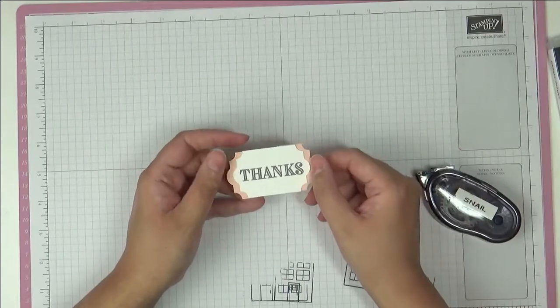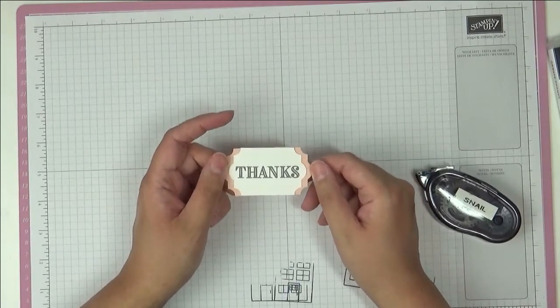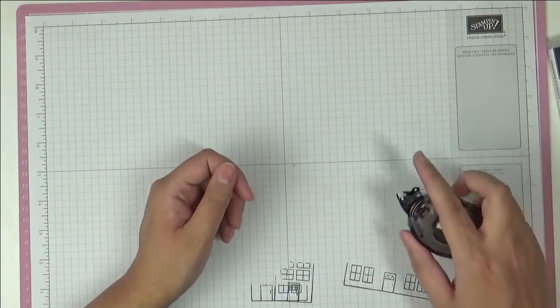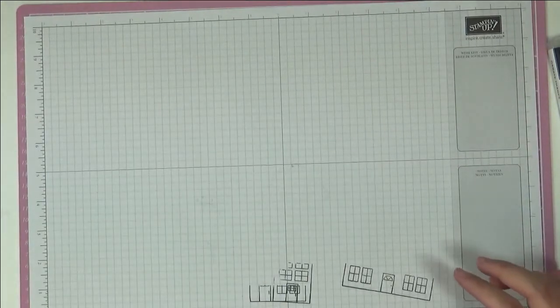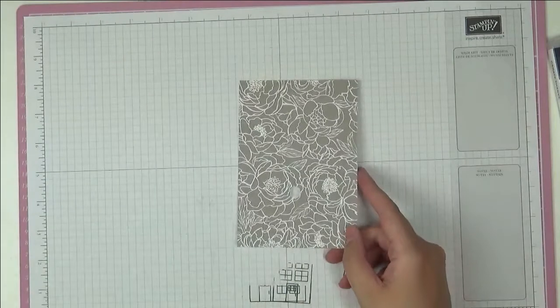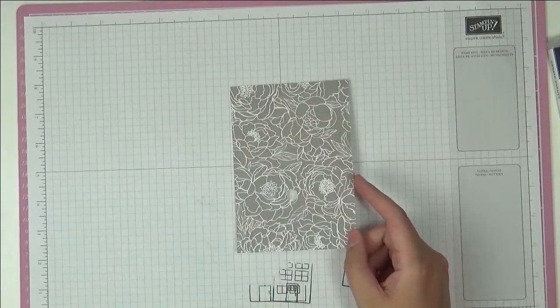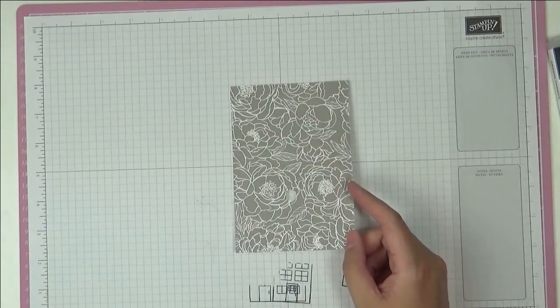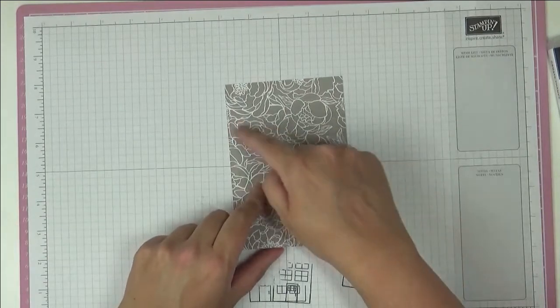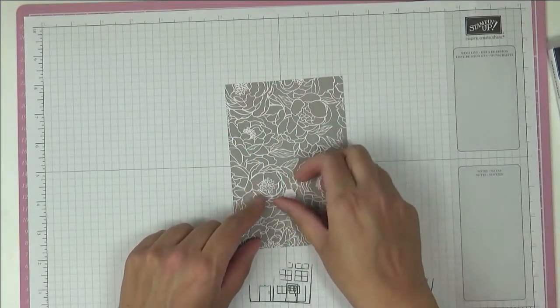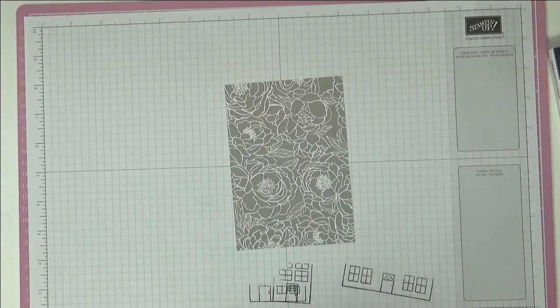So it's roughly there, you go, matted and set that aside. And then this is our piece of Designer Series Paper and this is from the Peony Garden suite. Let me just check - yeah, Peony Garden - and we're going to cut this now up into thirds. So I'm just going to get my paper trimmer to do that.